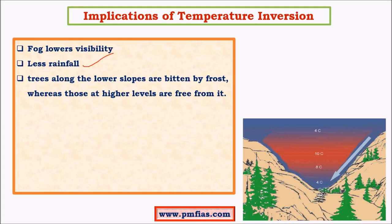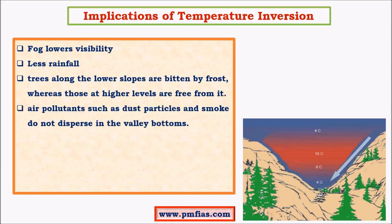Intermountain valleys receive less rainfall because of very stable conditions. Trees along the lower slopes are bitten by frost, as due to successive accumulation of colder air these regions are very cold. At higher levels there are layers free of frost that support vegetation growth. The presence of frost and very cold climate inhibits vegetation growth to some extent.